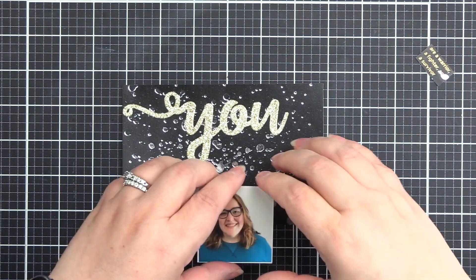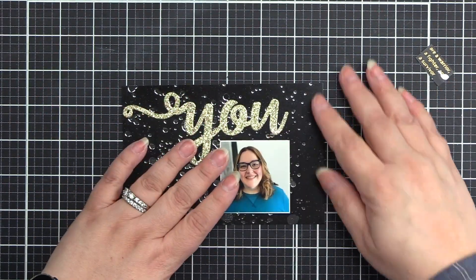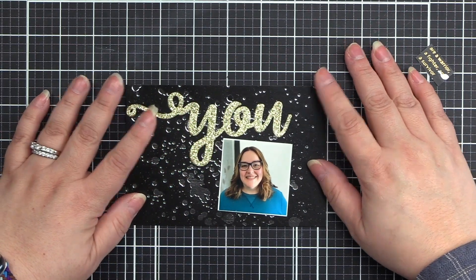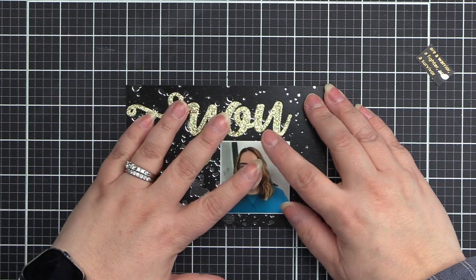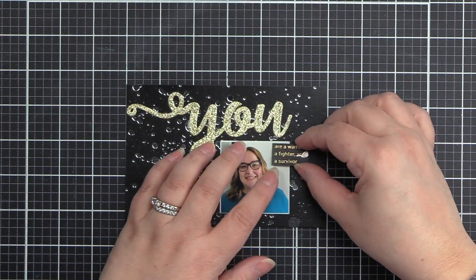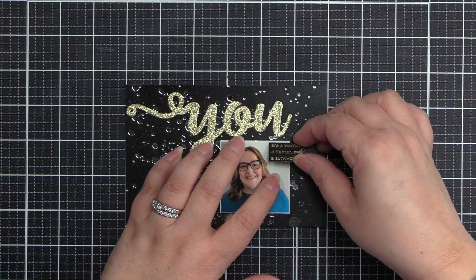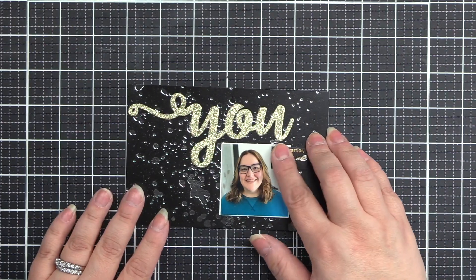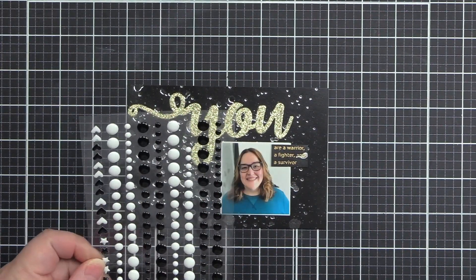I'm going to take the glue and I'm going to glue that down. I will put two thin foam 3D squares behind my sub sentiment and put that over my picture. I use the thin ones. Cause again, I don't want a lot of bulk in my album.